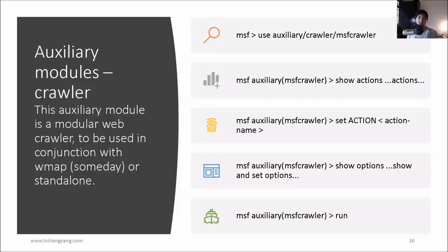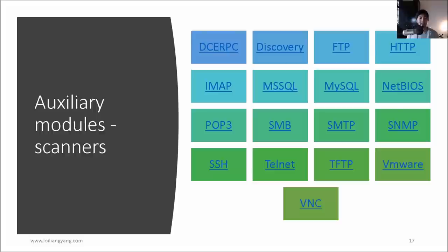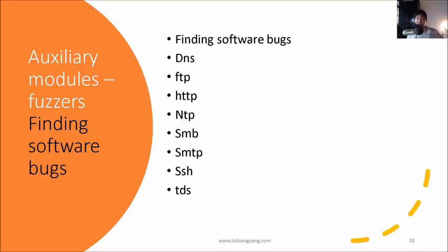The crawler auxiliary module allows us to crawl through web application servers, find subdirectories, and discover things that may have been accidentally exposed — similar to how search engine web crawlers work. The MSF crawler can help crawl into a web server and pull out that information. Scanners help us check whether a particular service is available and vulnerable to different exploits, such as scanning a Windows 10 system to see if it's vulnerable to EternalBlue.